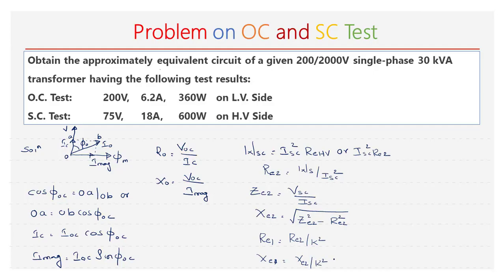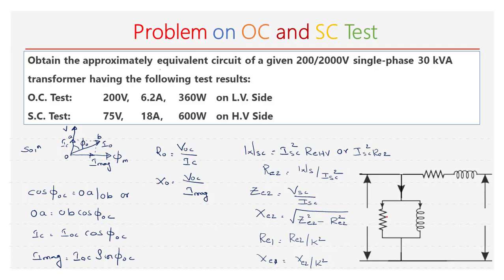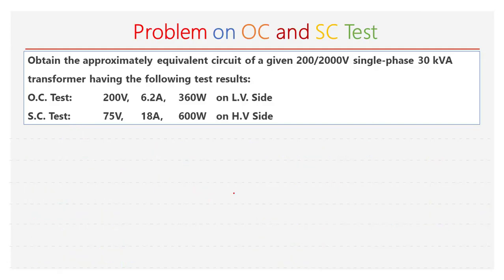Now we can represent all these quantities on the equivalent circuit of a transformer. This is the shunt element R0, with current Ic flowing through it, and shunt element X0, with the magnetizing current Im flowing through it. The input voltage is V1. The sum of Ic and Im is I0. Then we have the equivalent resistance and equivalent reactance referred to the primary, and the secondary voltage is V2 dash.